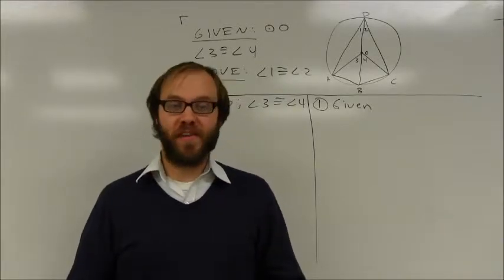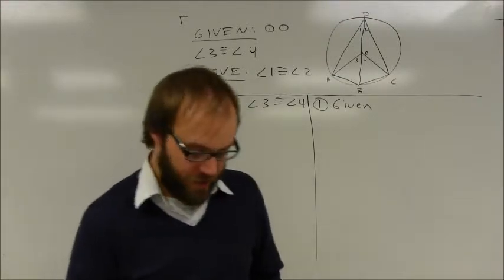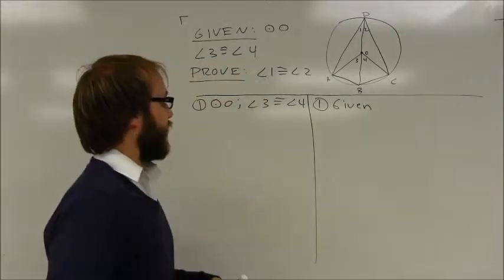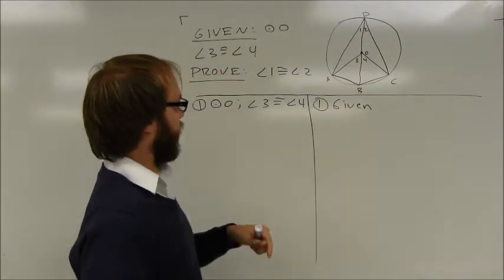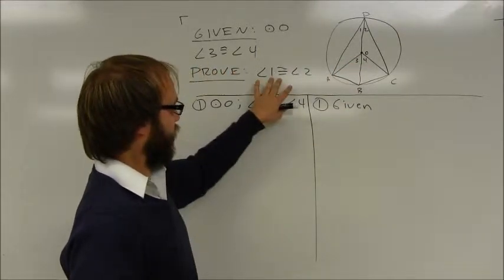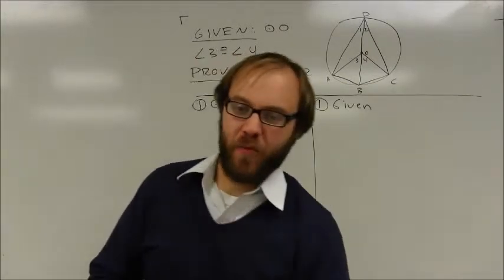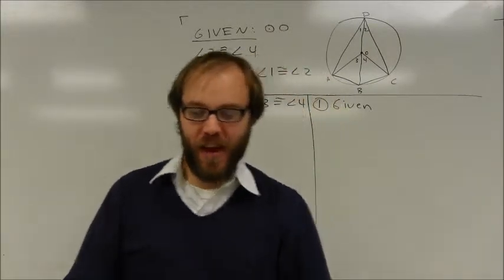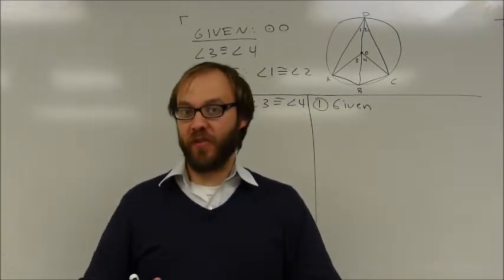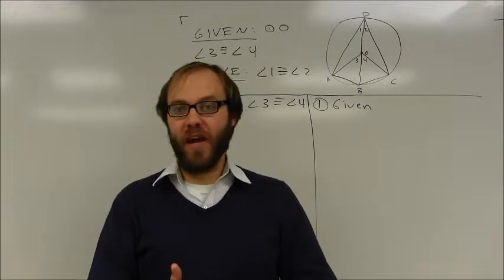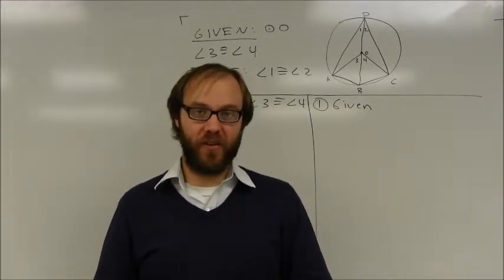My first proof for Chapter 4 is an example of a detour proof. So if you look at this diagram here, I'm given circle O, and I'm given angle 3 congruent to angle 4. I want to prove that angle 1 and angle 2 are congruent. The whole idea of a detour proof is that a lot of times you're not necessarily going to be given enough information to prove triangles congruent to give you what you want to show, but maybe you'll be given enough information to show some other pair of triangles congruent.